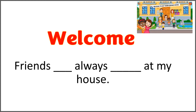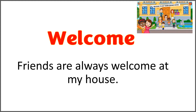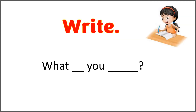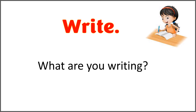The given word is 'welcome' and the sentence is 'friends blank always blank at my house.' Use 'welcome' with 'are' to complete the sentence. And the answer is: friends are always welcome at my house. The given word is 'right' and the sentence is 'what blank you blank?' Use the word 'right' with 'are.' The correct answer is: what are you writing? Oh look at the picture — she's looking very happy. Why are you so happy? Are you writing a letter?